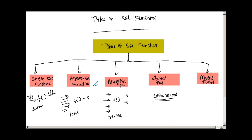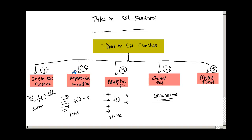So we have discussed five types of SQL functions. For most practical cases, understanding types one and two — single row and aggregate — is sufficient. Therefore, going forward in these videos, we are going to focus mostly on these two types of functions.